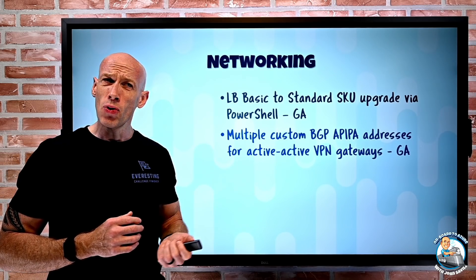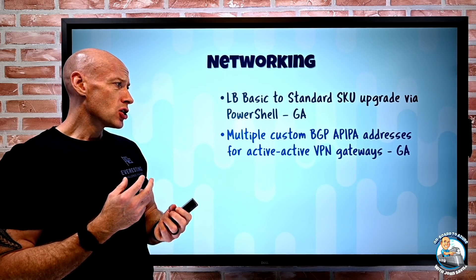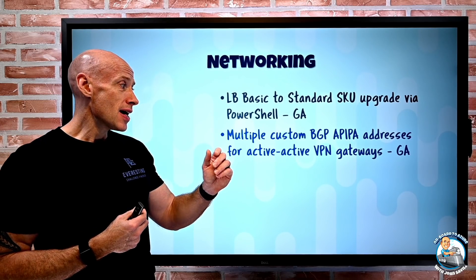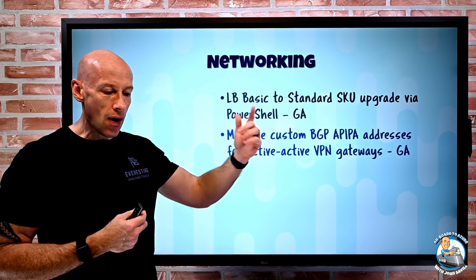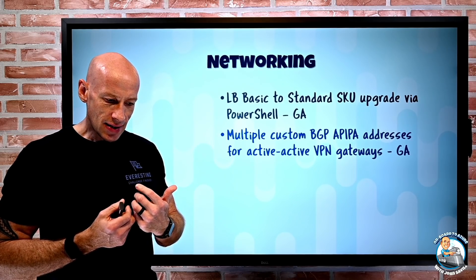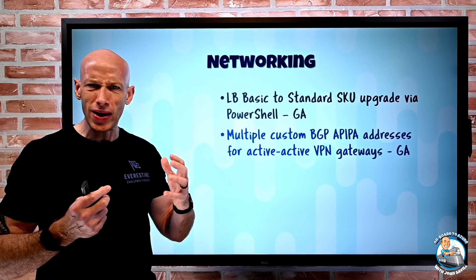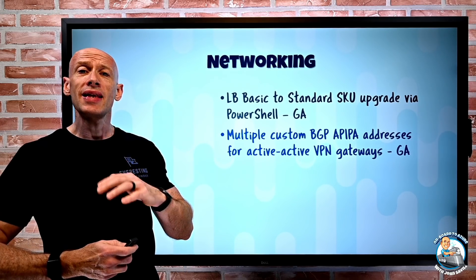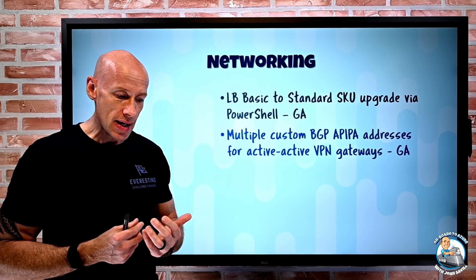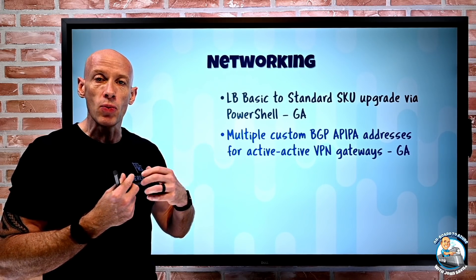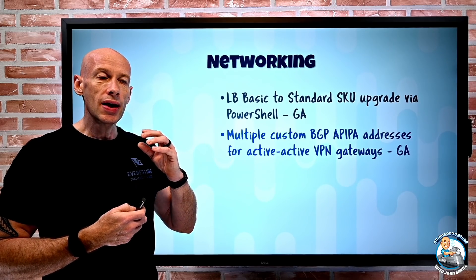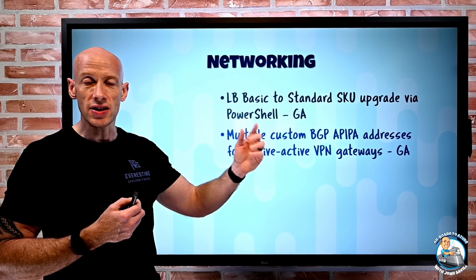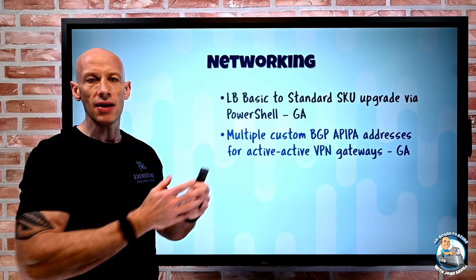This won't apply to many people, but when establishing a VPN connection, typically when talking to AWS they use the APIPA IP address ranges — that's the 169.254 range that we normally ignore. That range is actually used as part of that BGP session establishment with AWS. What you can now do is have multiple custom BGP addresses from that range if you're leveraging that.